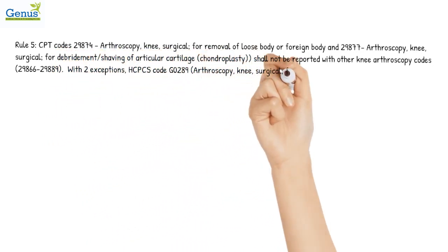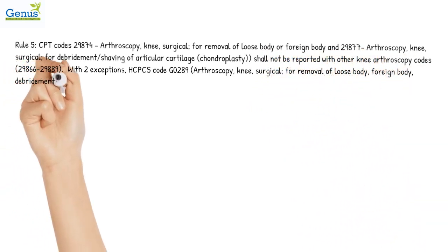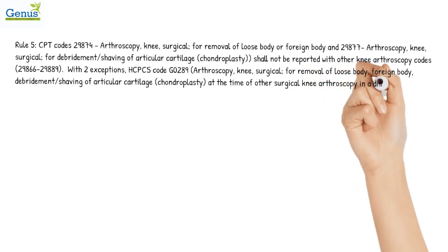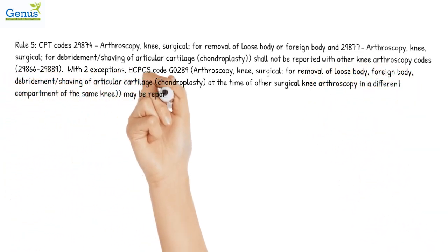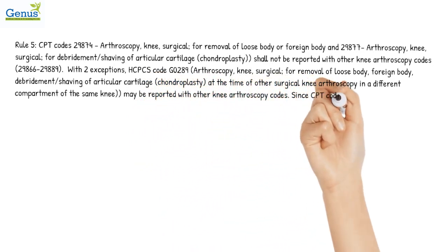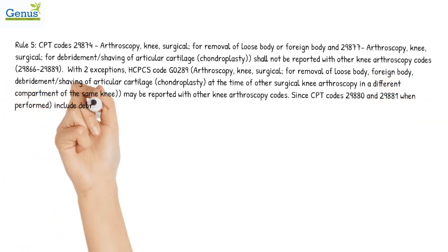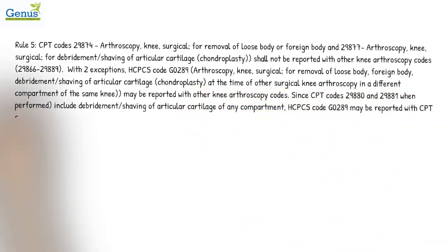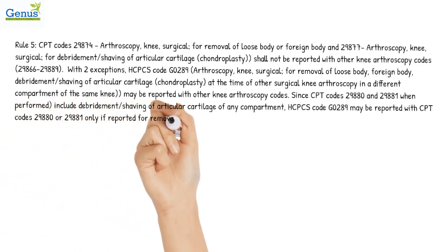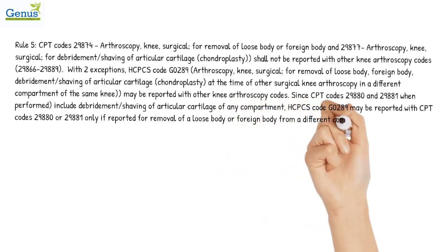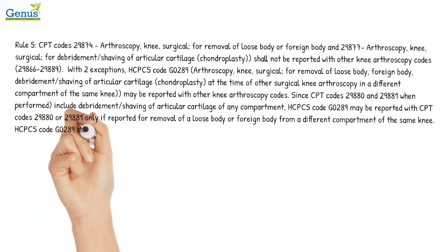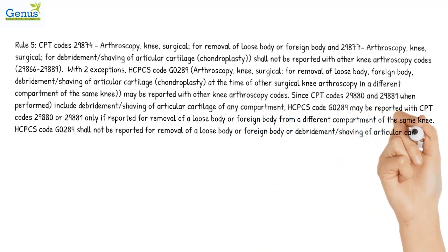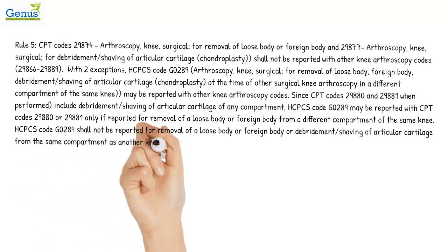There are two exceptions. HCPCS code G0289 (arthroscopy, knee surgical, for removal of loose body or foreign body, debridement and shaving of articular cartilage, chondroplasty, at the time of other surgical knee arthroscopy in a different compartment of the same knee) may be reported with other knee arthroscopy codes. Since CPT codes 29880 and 29881, when performed, include debridement and shaving of articular cartilage of any compartment, HCPCS code G0289 may be reported with CPT codes 29880 or 29881 only if reported for removal of a loose body or foreign body from a different compartment of the same knee. HCPCS code G0289 shall not be reported for removal of a loose body or foreign body, or debridement and shaving of articular cartilage, from the same compartment as another knee arthroscopic procedure.